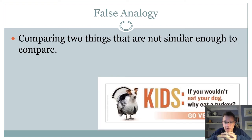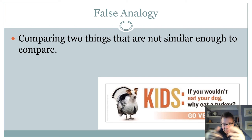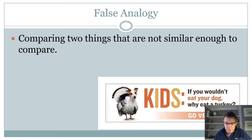False analogy is comparing two things that are not similar enough to each other. Here's an example from a PETA ad: 'You wouldn't eat your dog. Why would you eat a turkey?' Well, you're really not going to eat a dog in this country anyway — it's a silly analogy. But you'd be amazed how many of these things appear in actual data-driven decision making.